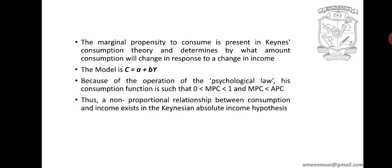Also, MPC — marginal propensity to consume — is less than APC — average propensity to consume. MPC is equal to change in consumption divided by change in income. For example, if your income is ten thousand rupees and your consumption was three thousand rupees, and the income changes from ten thousand to fifteen thousand, the change in income is five thousand. If your consumption changed from three thousand to four thousand rupees, the change in consumption is one thousand.